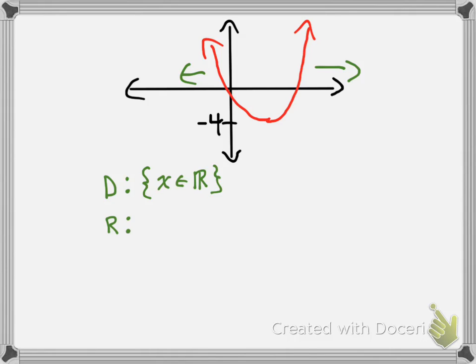For the range, not all the y values are going to be included because there is a minimum value on our function right here — a minimum value of negative 4. So we're still going to have an infinite number of points, it's just not going to include any y values less than negative 4. We start with our set bracket, write y ∈ ℝ, add our 'such that' bar, and our condition is that y is greater than or equal to negative 4. So: the set of y values which are elements of the real number system such that y is bigger than or equal to negative 4.